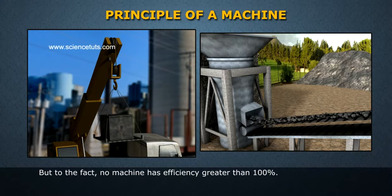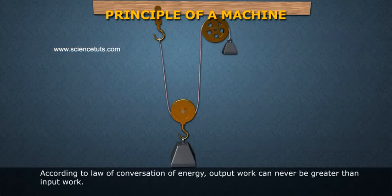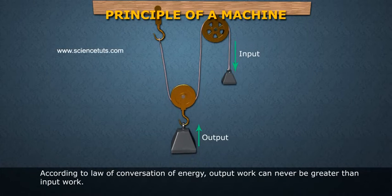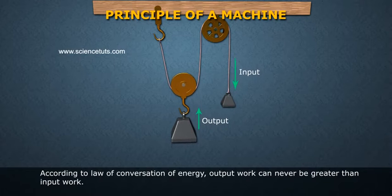But in fact, no machine has efficiency greater than 100%. According to the Law of Conservation of Energy, output work can never be greater than input work.